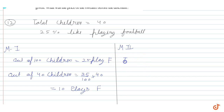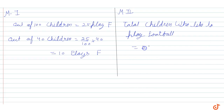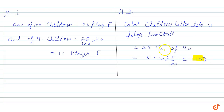In method two, total children who like to play football is equal to 25% of 40. We calculate 40 into 25 by 100, which is equal to 10. The answer of both methods is the same.